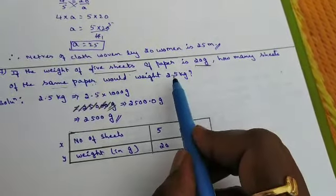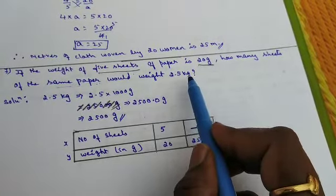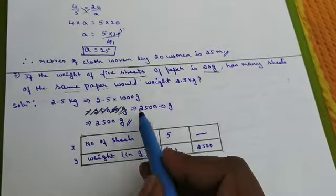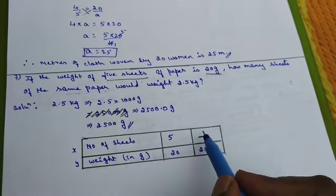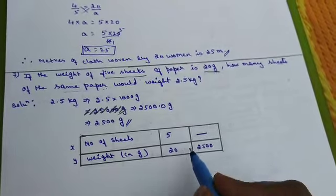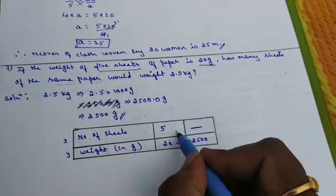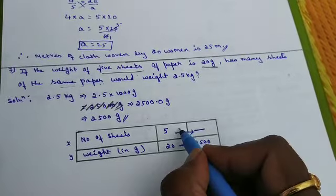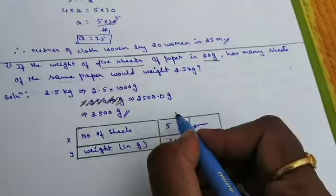Please be aware children, don't write 2.5 kg because here it is in grams. It should be in one unit only. So I have converted the kg into grams, 2500 grams. How many sheets of paper? As the weight increases, the number of sheets also increases. So this is the case of direct variation.